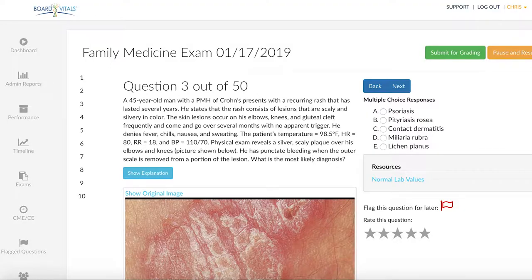It is a 45-year-old man with a past medical history of Crohn's disease. He's presenting with a recurrent rash that has lasted several years. This rash consists of lesions that are scaly, silvery in color. They occur over his elbows, over his knees, and above his gluteal cleft, and they come and go over several months. He's never been able to identify any trigger.